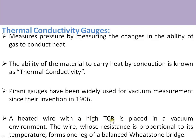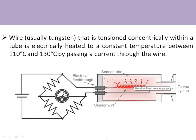In thermal conductivity gauges — the Pirani gauge — a heated wire with a high temperature coefficient of resistance, made of tungsten, is placed in a vacuum environment. The wire's resistance is proportional to temperature and forms one arm of a Wheatstone bridge. The Pirani gauge head contains a tungsten filament forming one arm of the bridge, connected to the system where vacuum is to be measured. More molecules means higher pressure, which means more heat is carried away, causing temperature and resistance of the filament to decrease.